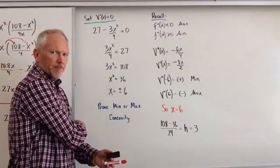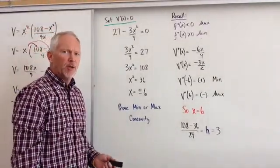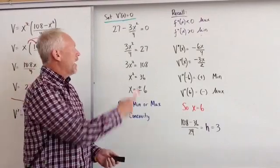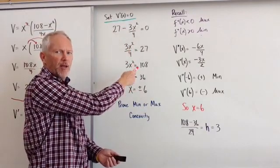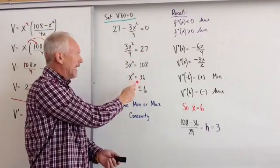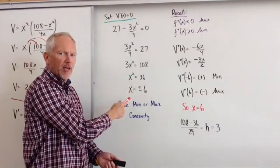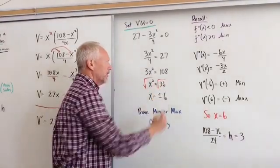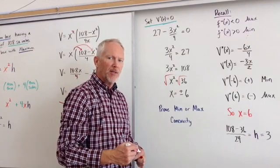Set V prime of x equal to 0. So 27 minus 3x squared over 4 equals 0. And you can see that if we subtract the 27, divide by negative 1, and then 4 times 27 is 108, divide by 3, we get x squared is equal to 36. If we take the square root of both sides, we get x is equal to plus or minus 6.